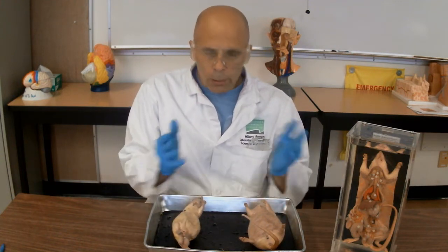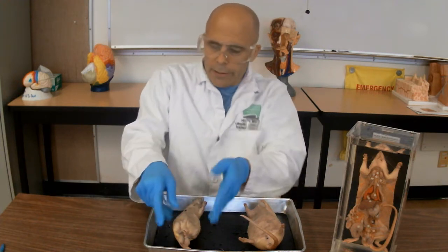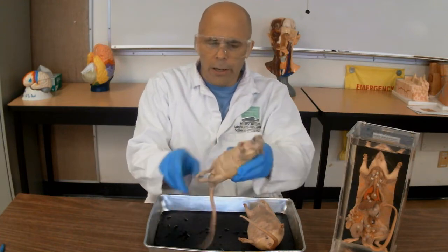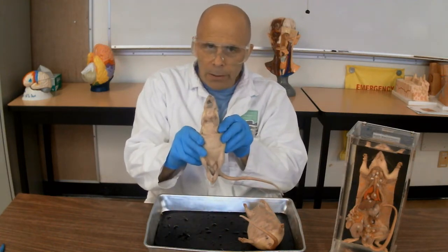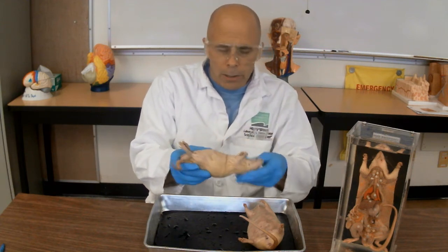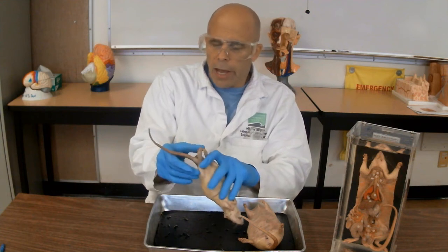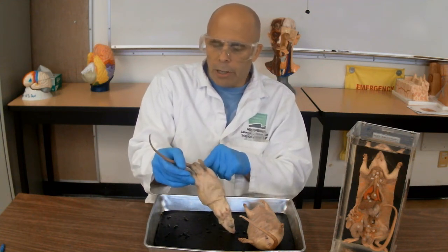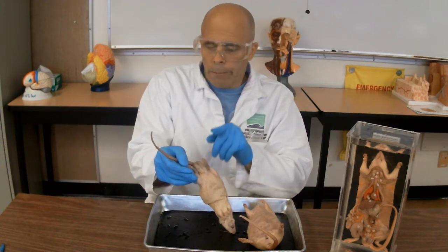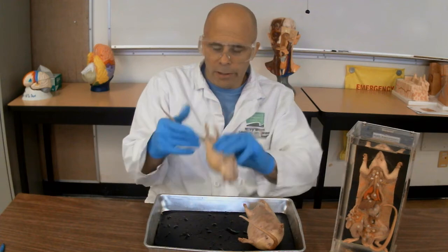Let's look at the external anatomy of these two animals, starting with the small one. Male or female? Everyone thinks males are bigger generally, but not in this case. I can verify that this is a male rat because between the hind legs I can see reproductive structures, including the scrotum and testes. So that's a male rat.